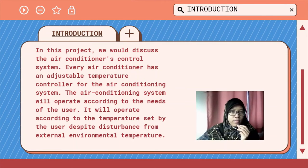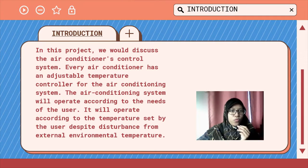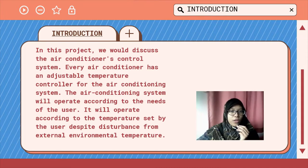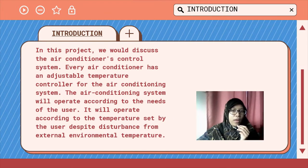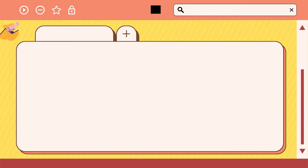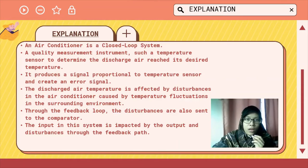In this project, we will discuss the air conditioner's control system. Every air conditioner has an adjustable temperature controller for the air conditioning system. The air conditioning system will operate according to the needs of the user. It will operate according to the temperature set by the user despite disturbance from the external environmental temperature.